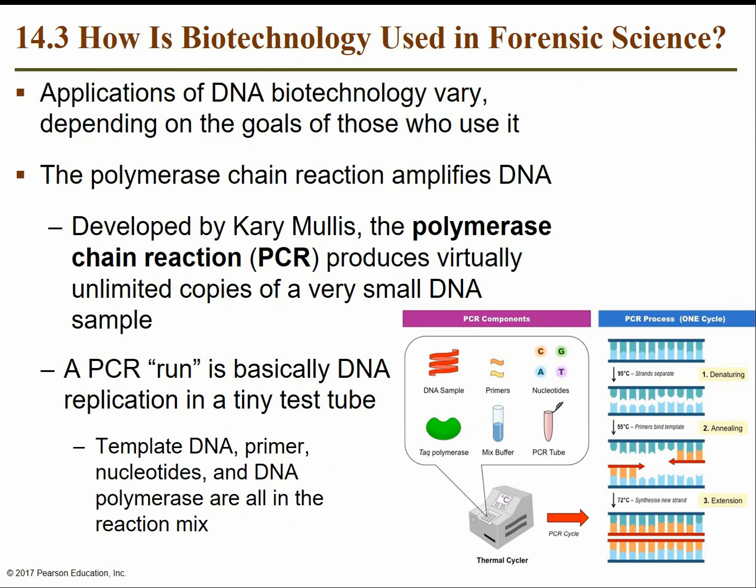One foundational biotechnology mechanism is PCR, or polymerase chain reaction. PCR works to amplify a DNA sample, producing virtually unlimited copies from a very small starting sample. When you run reactions and tests on DNA, you need lots of copies to work with, so if you start with just a couple, PCR builds up your sample material. A PCR run is basically DNA replication in a tiny test tube — you add enzymes, nucleotides, and run it in a machine.